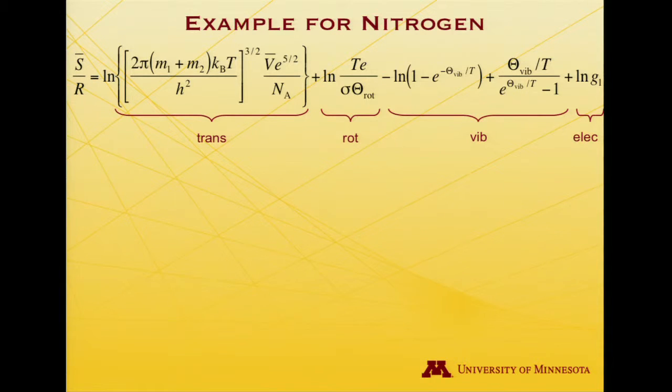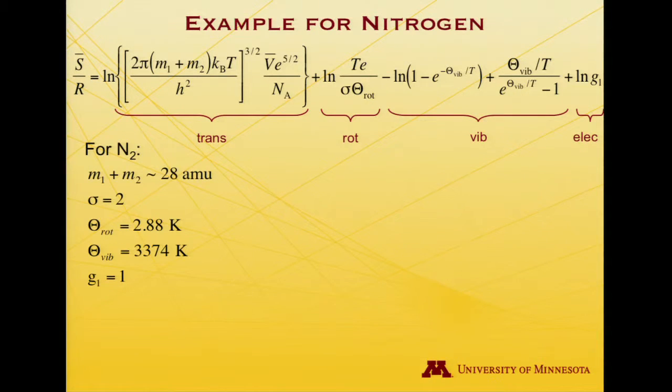And so what do we need in order to actually compute the entropy? Well, this is nitrogen, nitrogen gas. And so appearing in this first expression are the masses of the two atoms in the diatomic. And if we were doing two nitrogen-14 isotopes, M1 would be equal to M2. So it's about 28 atomic mass units. A tiny bit different because the atomic mass unit is defined for carbon-12, but close enough. You could go look up the exact number in kilograms if you want to. The symmetry number appears in the rotational term. And it's 2 for a homonuclear diatomic. And we need the rotational temperature. And if you go look that up, we had it on previous slides as well, it's 2.88 Kelvin.